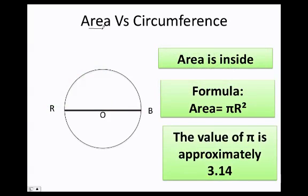Let's talk about the difference between the area and the circumference of a circle. The area is what is inside. That is why the area formula is equals to pi times r squared. The value of pi we always want to approximate to be 3.14.